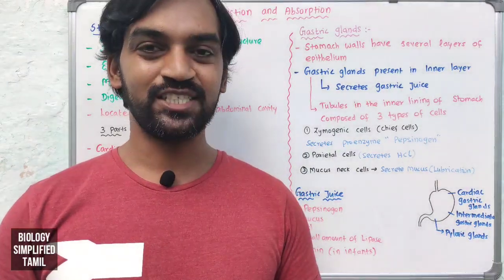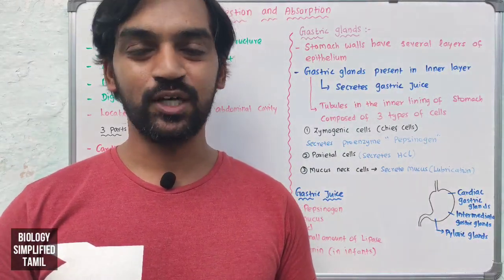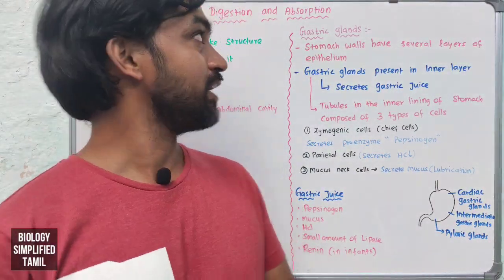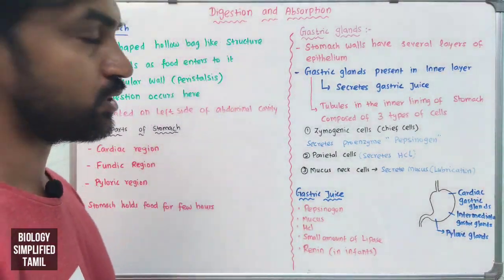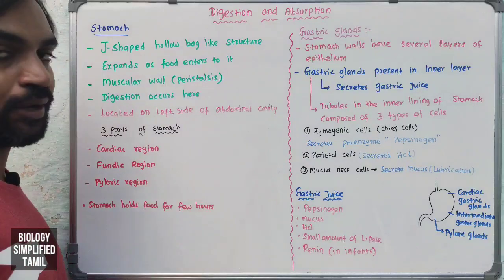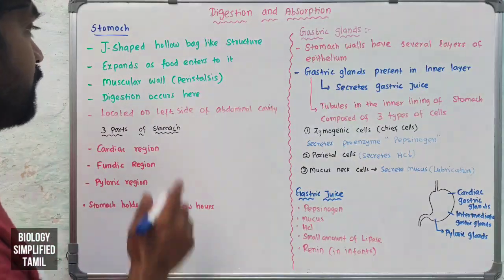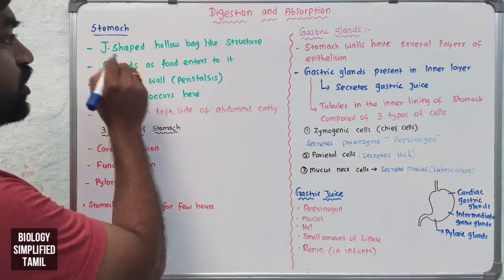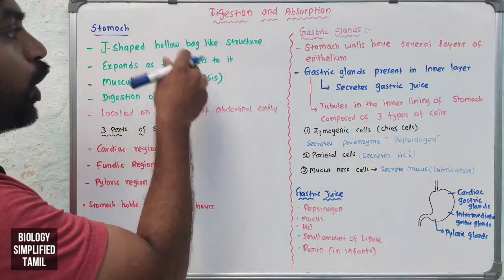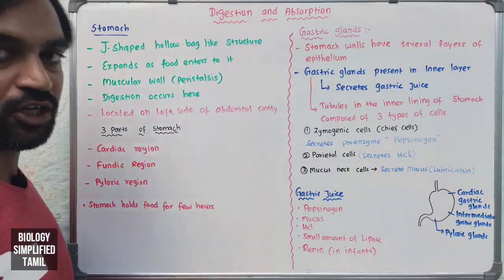Hi friends, welcome to Biology Simplified Tamil. I'm going to talk about your stomach, digestion and absorption. We will talk about the stomach in a J-shape. It is a hollow bag-like structure.